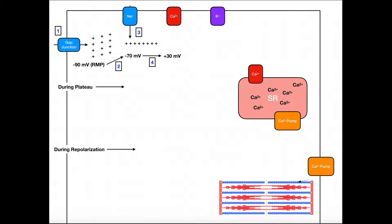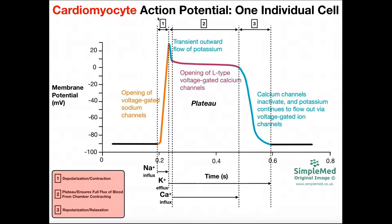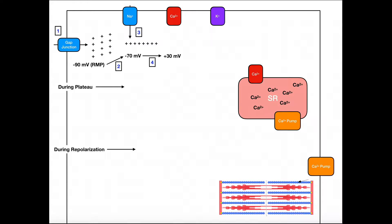In the previous video we talked graphically about the cardiomyocyte action potential — the action potential that is triggering a cardiac muscle cell, the myocardium of the heart, to contract. We're not talking about pacemaker cells; that we talked about long before. This is for the cardiomyocyte, and now we're going to look at what's actually going on physiologically inside the cell, not just the graph.